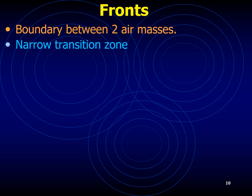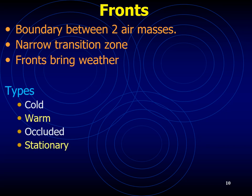A front is the transition zone between two air masses of different densities. Since density differences are most often caused by temperature differences, fronts usually separate air masses with contrasting temperatures, and often with different humidities as well. Air masses have both horizontal and vertical extent, so the upward extension of a front is referred to as a frontal surface or frontal zone. There are four types of front: cold fronts, warm fronts, occluded fronts, and stationary fronts.